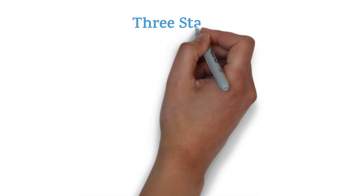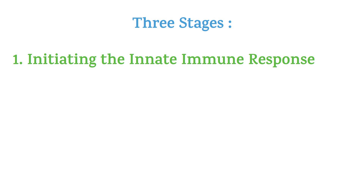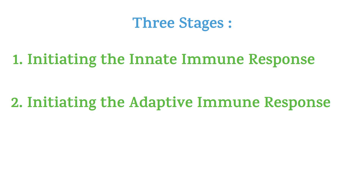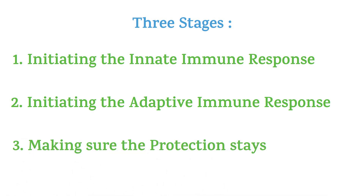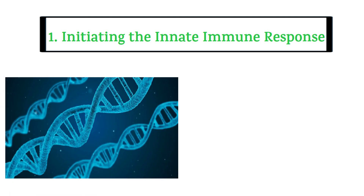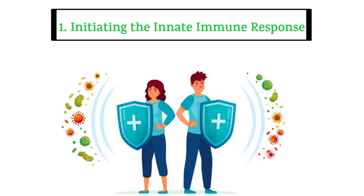The immune system protects us in three stages if need be: first, initiating the innate immune response — which is the focus of this video; second, initiating the adaptive immune response; and third, making sure the protection stays. Almost all living beings have an innate immune system. This system we acquire through our genes, or simply put, evolution. Since it is the first line of defense our body has against pathogens, it has to be fast — it acts within minutes — and it is broad spectrum.